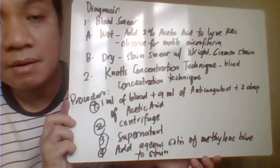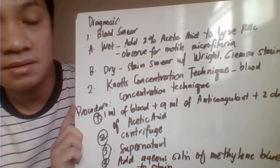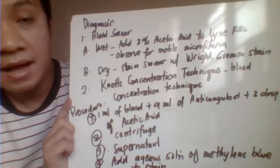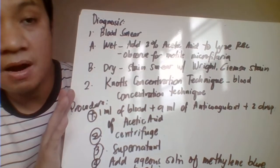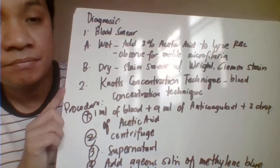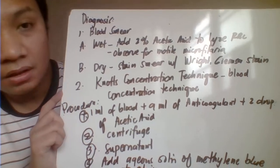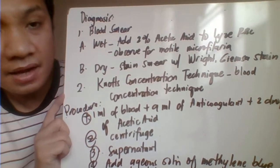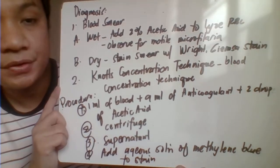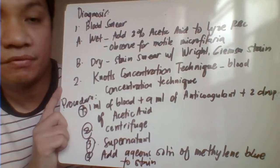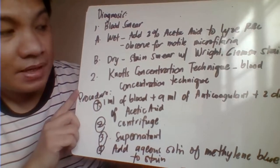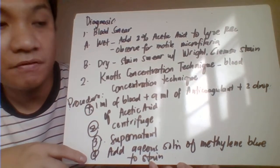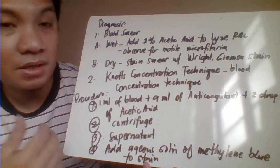For laboratory diagnosis, blood smear preparation can be done as either wet mount or dried smear. For the wet mount, the sample should ideally be collected during the nocturnal periodicity — the best time is 10 p.m. to 2 a.m. In the wet mount, blood is mixed with 2% acetic acid to lyse red blood cells, then motile microfilaria are observed moving within the blood.